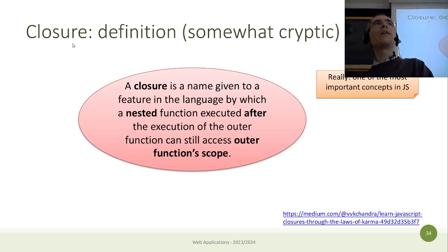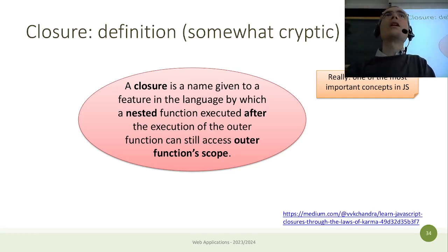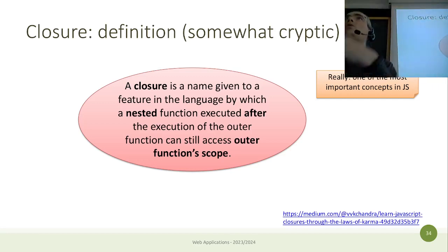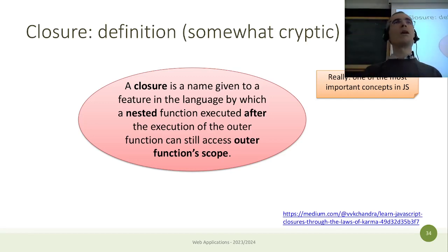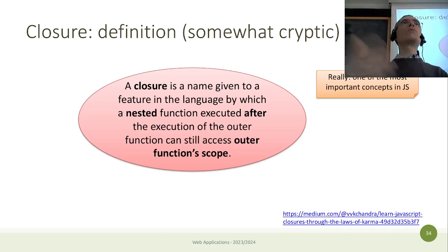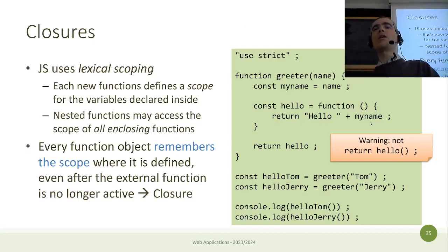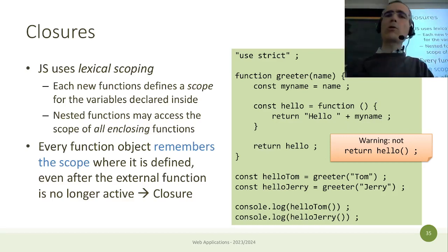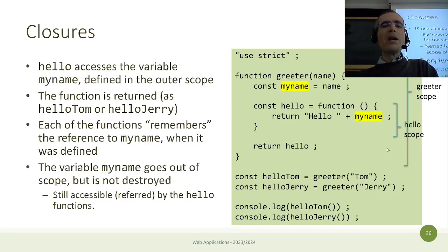What happens in JavaScript is that if you return a function reference, the function object also remembers the scope in which it was defined. All the variables that were visible when you wrote this function are not accessible to the rest of the program, but are still accessible to this special function. This is called a closure — the way JavaScript allows a function to access something that is no longer in scope.